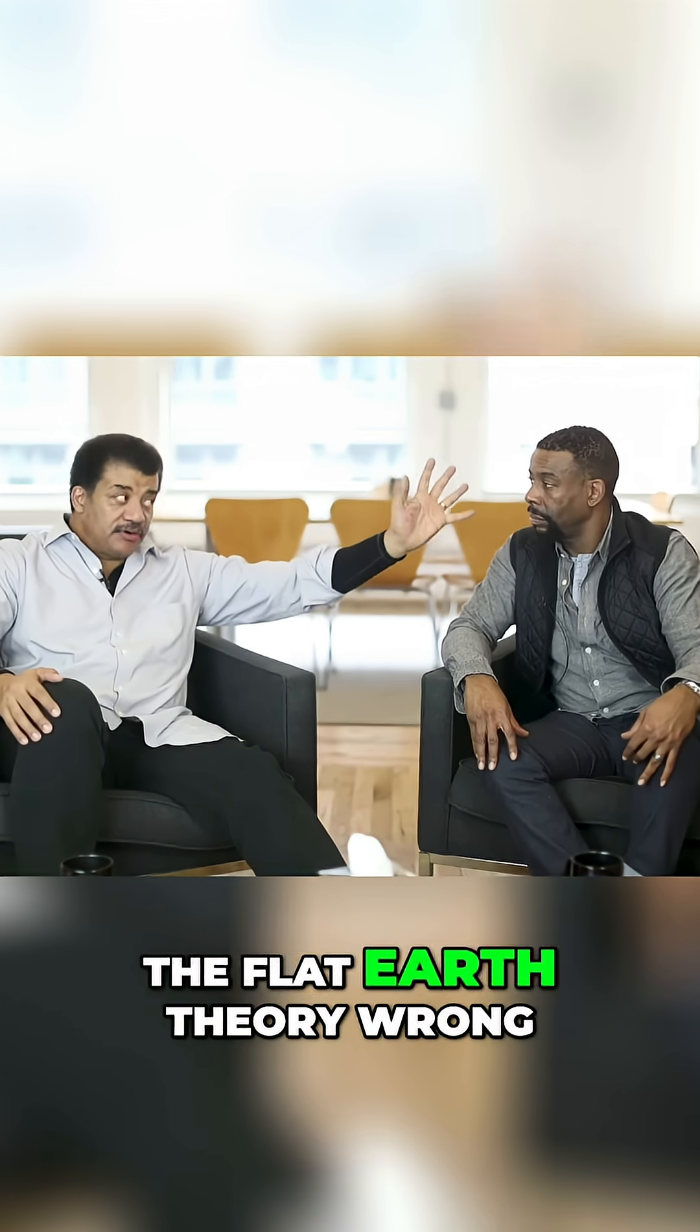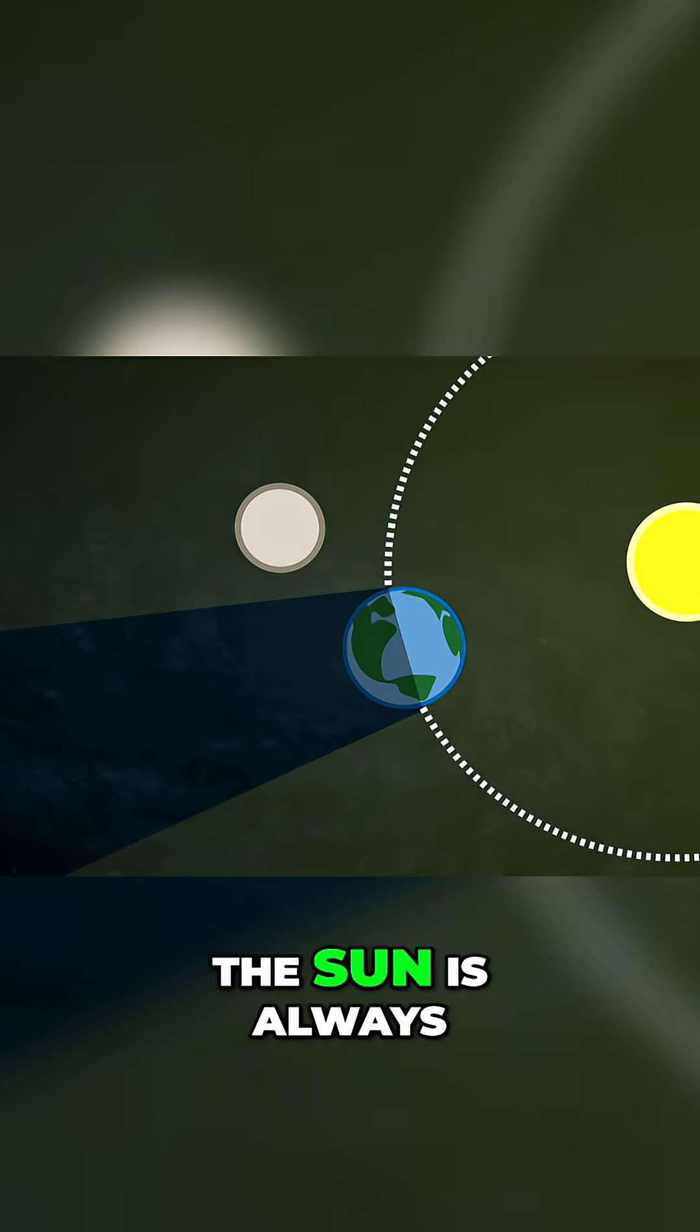Watch Neil easily prove the flat Earth theory wrong. The sun is always casting Earth's shadow into space. It's always there no matter what.